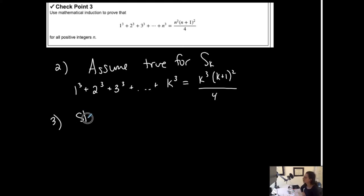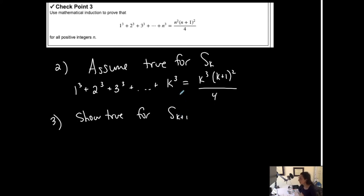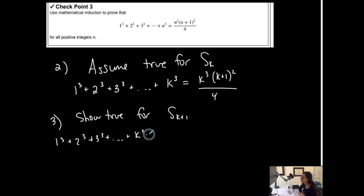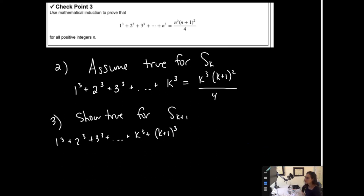Now I have to show it's true for k plus 1. So this is one more term past the kth term. On the left I have 1 to the third plus 2 to the third plus 3 to the third plus k to the third, and then I have the next term which is k plus 1 to the third.